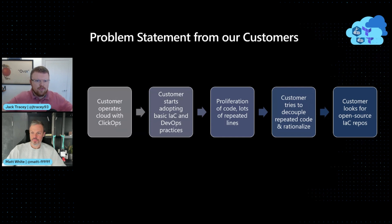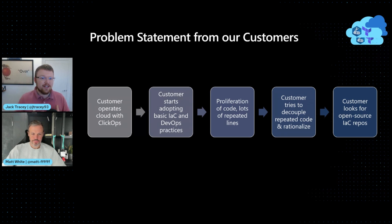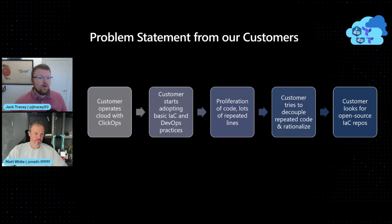And that's great. All these teams run off and do these separate things across an organization, and then you realize that you step back and you have five different ways of deploying a VNet, ten different ways of deploying a VM, and fifteen different ways of deploying a storage account. You should probably get together and centralize this, make some efficiencies, don't repeat yourself everywhere, and reduce the amount of code you've got to maintain. You then go on that journey of trying to decouple, stop repeating code, and rationalize everything. And somebody says we should probably look externally because someone else has likely solved this, or Microsoft might have something to help.